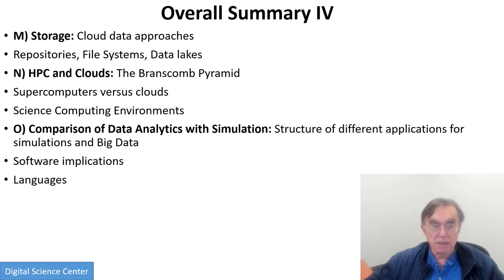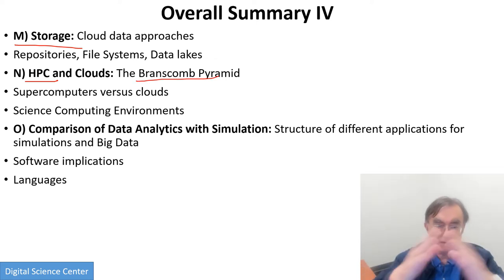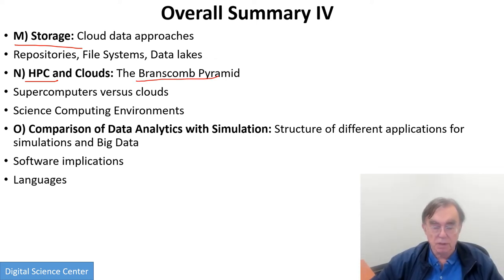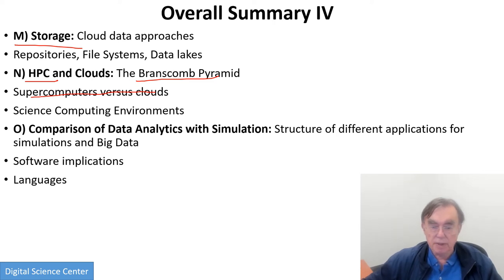The next six sections cover particular sub-technologies within clouds. Firstly, storage — data repositories, file systems, what's called a data lake. Then we look at high-performance computing and cloud, the so-called Branscombe Pyramid from the very top of the few incredibly powerful computers down to the bottom — consumer systems such as smartphones, laptops, or desktops. We describe supercomputers compared to clouds, and we look at the difference between simulations and big data and what it implies for software and for languages.